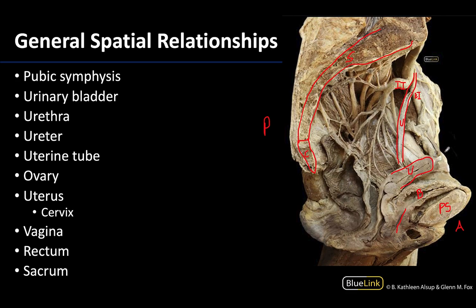Extending laterally from the uterus you are going to have the uterine tube in this general region. You can actually see the infundibulum portion right here, and you can see a bit of those fringed outlines which are part of the fimbriae of the infundibulum of the uterine tube. You can also see the ovary right here, in very close approximation to the uterine tube and those fimbriae, and not too far from the uterus.